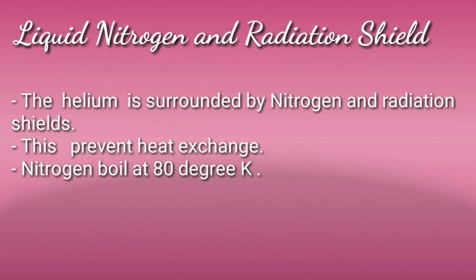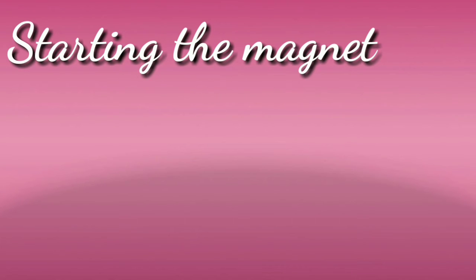The helium is surrounded by nitrogen and a radiation shield. This prevents heat exchange. When heat comes from outside toward the superconducting material, it is blocked by these two layers — helium and nitrogen. Nitrogen boils at 80 Kelvin, and helium also boils at a certain temperature, so maintaining their coolness is essential.